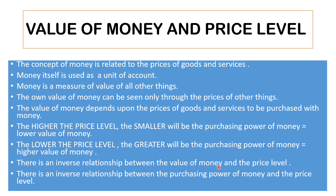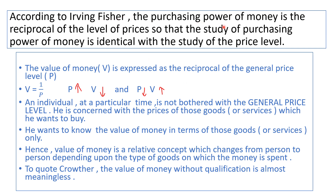There is an inverse relationship between the value of money and the price level — one rises, the other falls. According to Irving Fisher, the purchasing power of money is the reciprocal of the level of prices, so the study of purchasing power of money is identical with the study of price level. Value of money, denoted as V, is expressed as the reciprocal of the general price level P. So V equals 1 upon P. When P rises, the value of money comes down; when P comes down, the value of money rises.